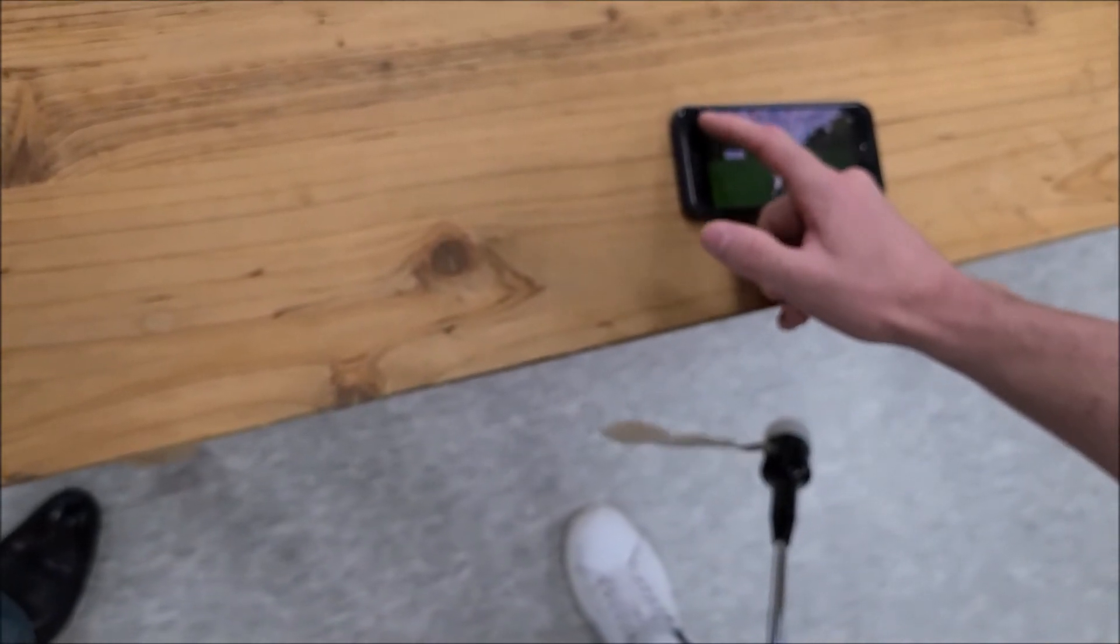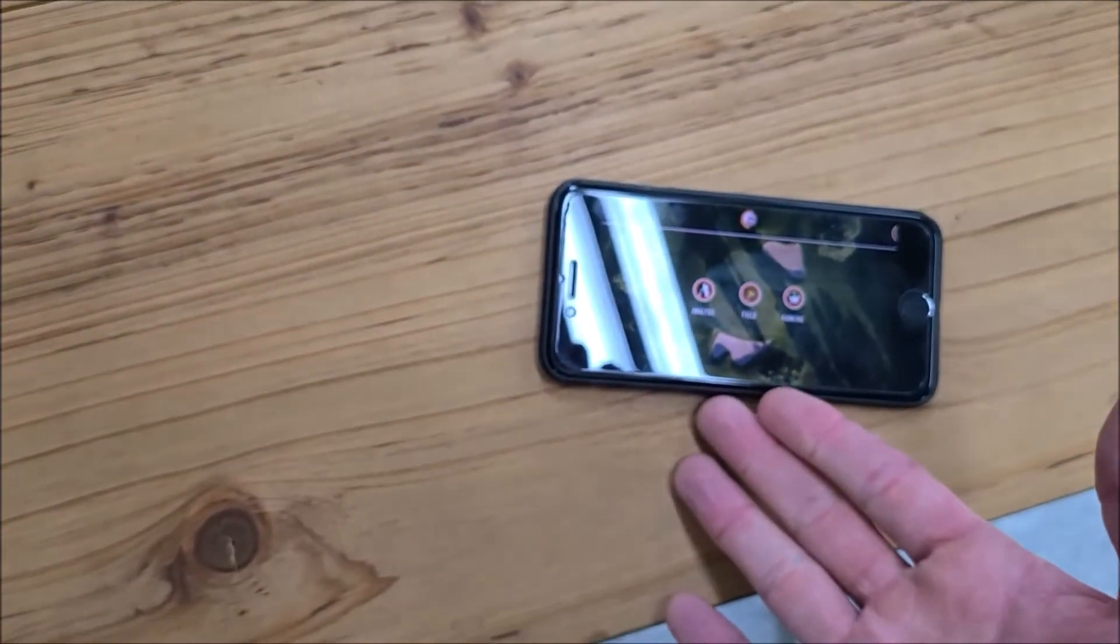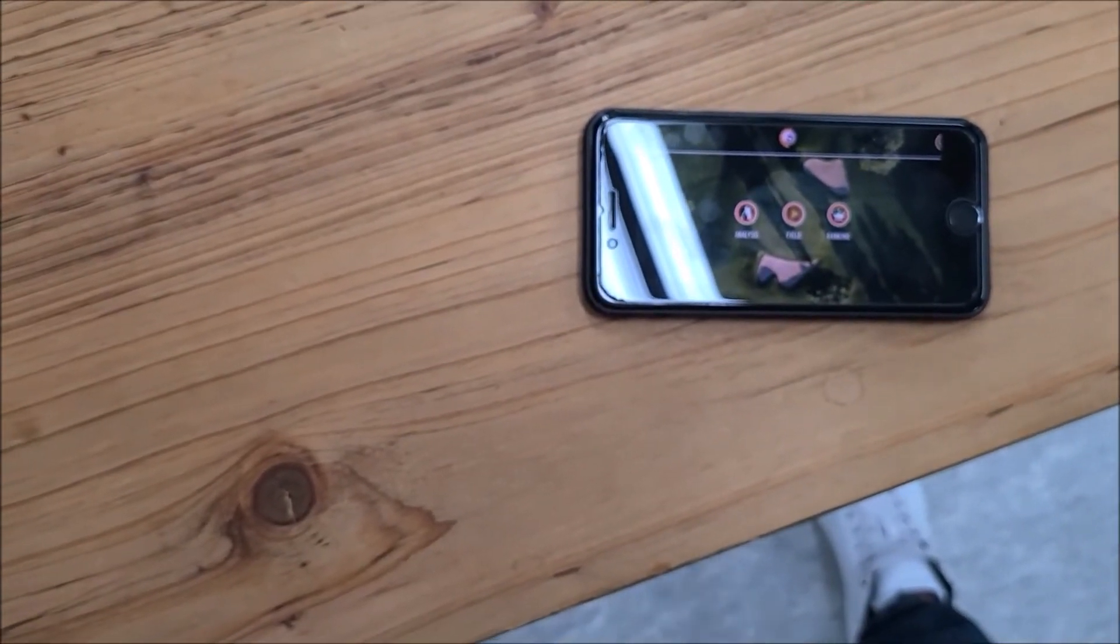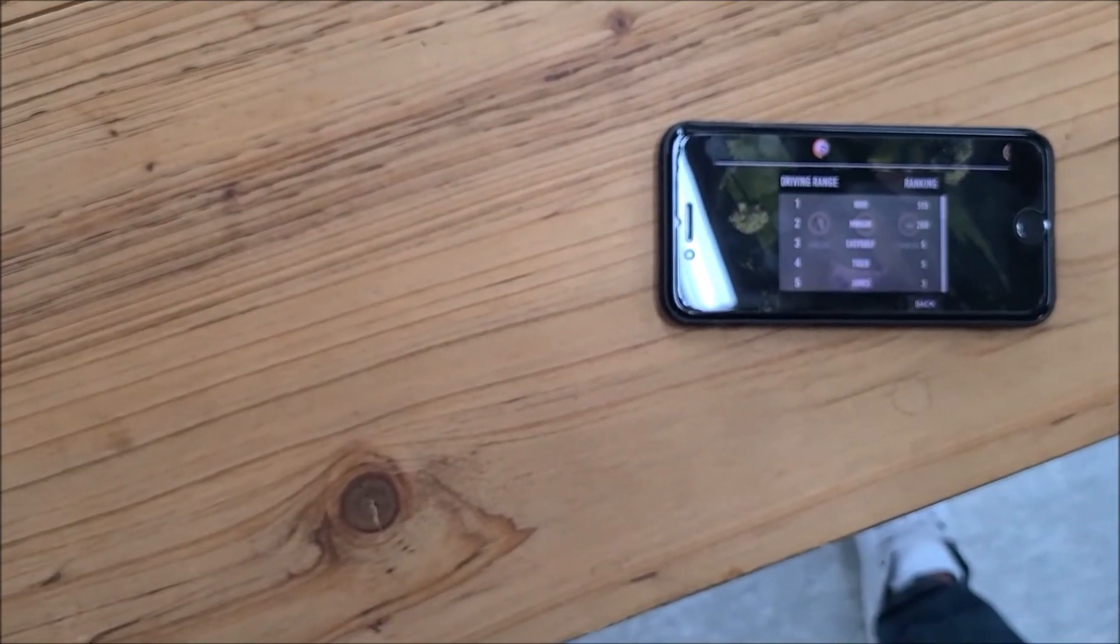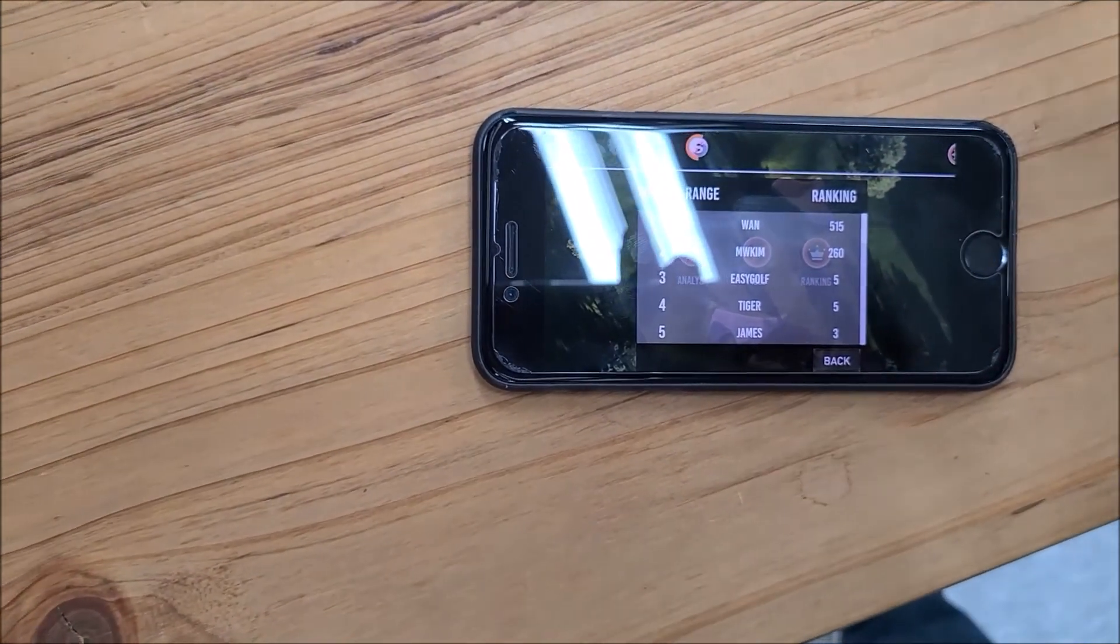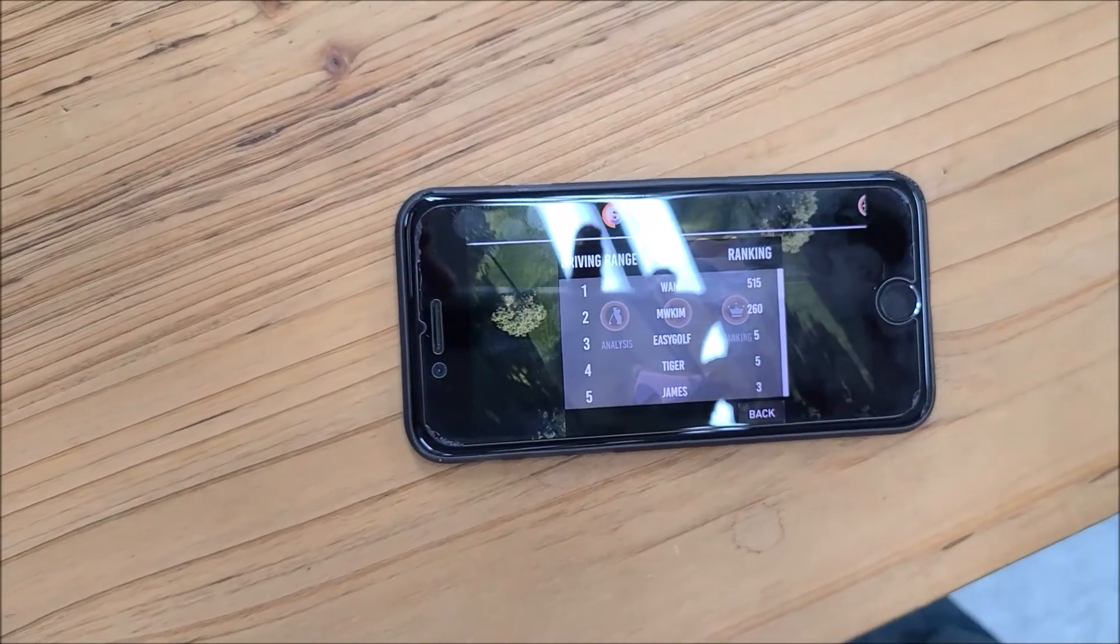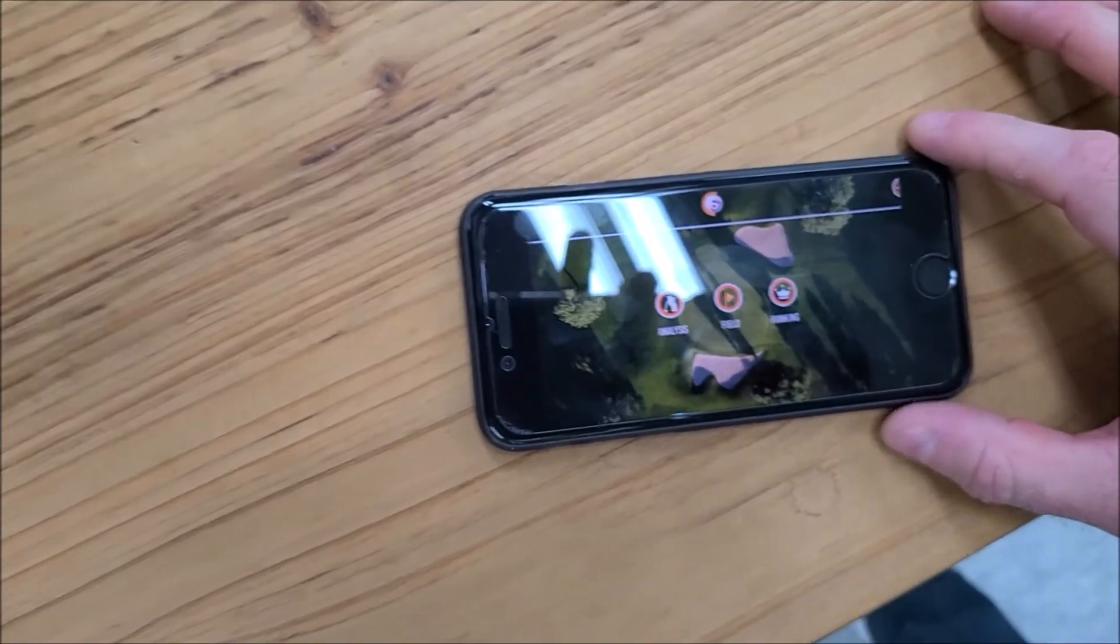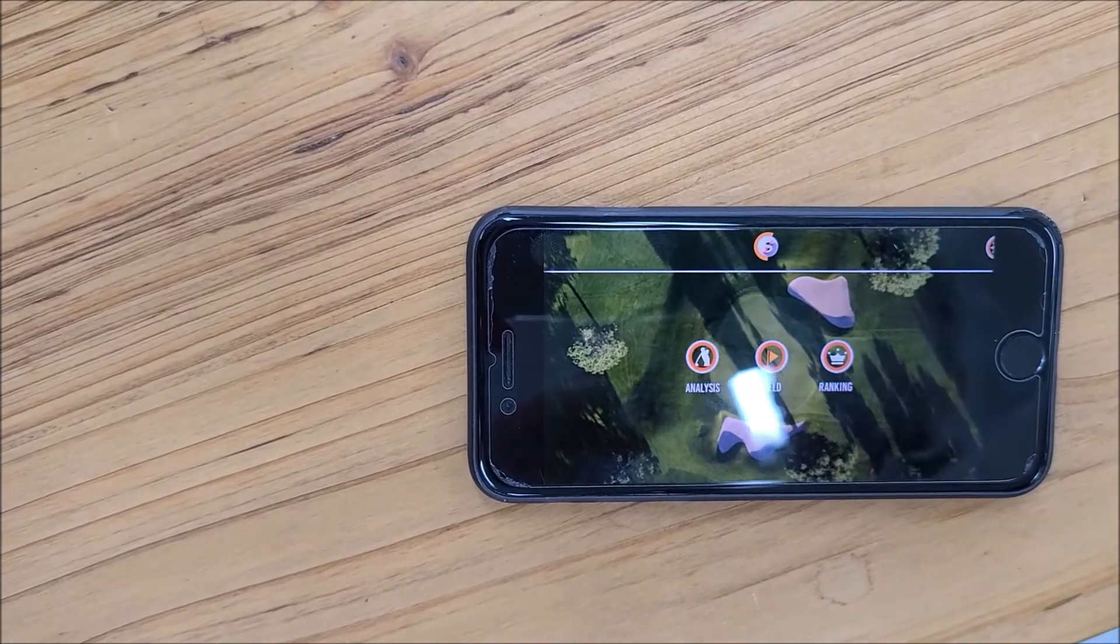The Ranking feature - here we can put ourselves up against other people that are playing using the app. There you can see Tiger - that's me. You can compete against other people in the point ranking system. Thank you very much. There we have the Smart Golf Smart Club features of the app.